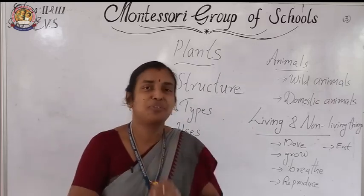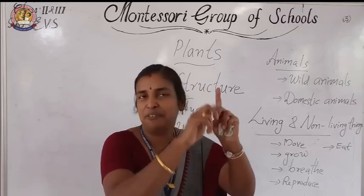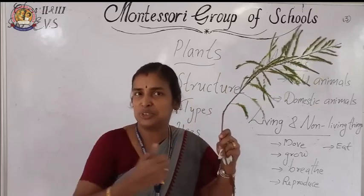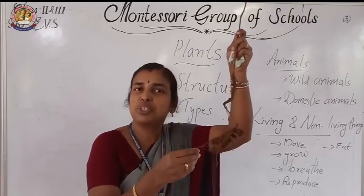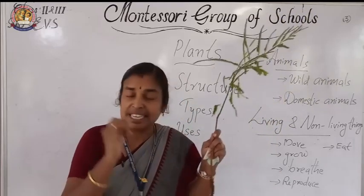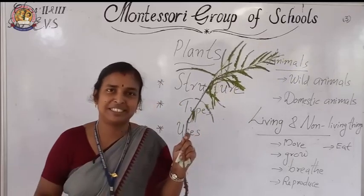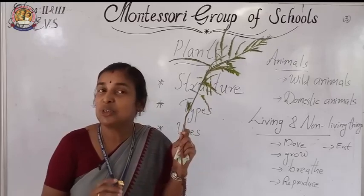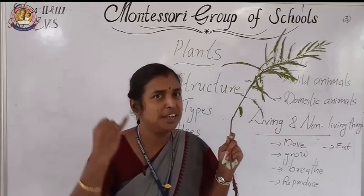Now let us study the function of root. Root has three functions: absorption, fixation, and storage. What is absorption? We eat food to get energy. Same way, a plant will absorb nutrients from the soil. These roots will absorb water and nutrients. The second function is that this root helps the plant to fix in the ground — that is fixation. Have you seen carrots? That is a root. The plant will store its food in the root — that is storage. So the functions of root are absorption, fixation, and storage.